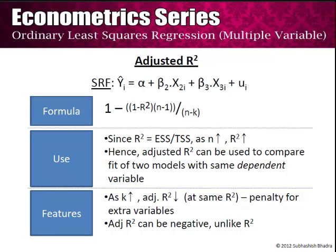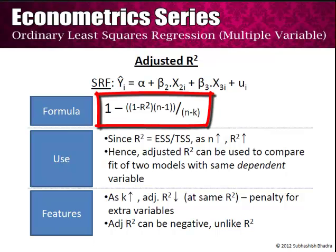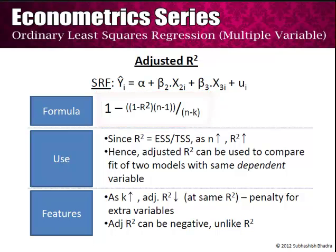To adjust for this, we talk about the adjusted R-square. The formula for the adjusted R-square is: 1 minus (1 minus R²) × (n-1)/(n-k). The adjusted R-square can be used to compare the fit of two models with the same dependent variable. This is extremely important: when comparing adjusted R-square for two different models, we can only compare them when the dependent variable is the same, i.e. when y is the same.